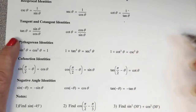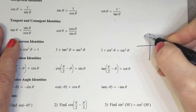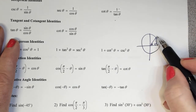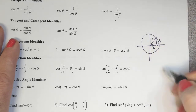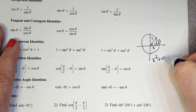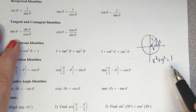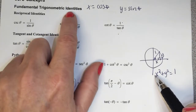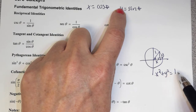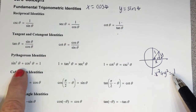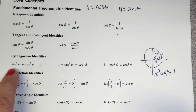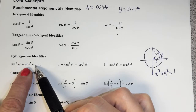These Pythagorean identities are very helpful to know. Here's the reason they work: if I have an angle theta in a right triangle, I know a² + b² = c². Instead of a, b, and c, I have x, y, and r. So x² + y² = r², which equals 1. What's another name for x? Cosine theta. So cosine² θ + sine² θ = 1. We typically write it as sine squared theta plus cosine squared theta equals 1.